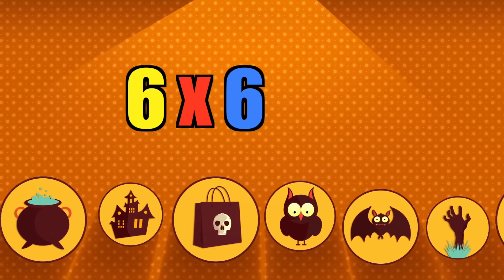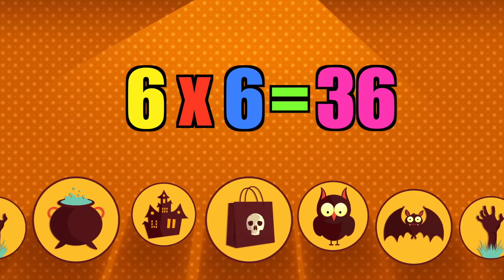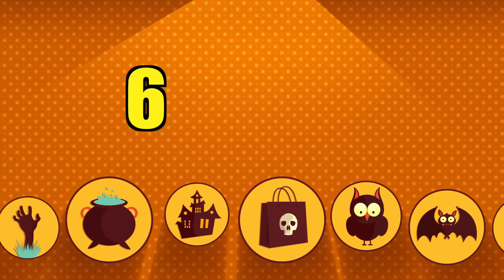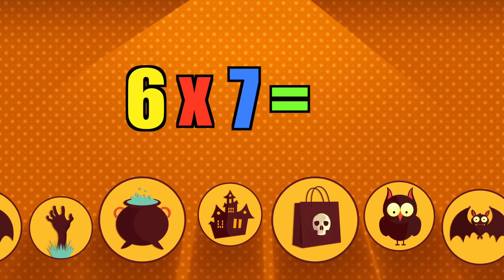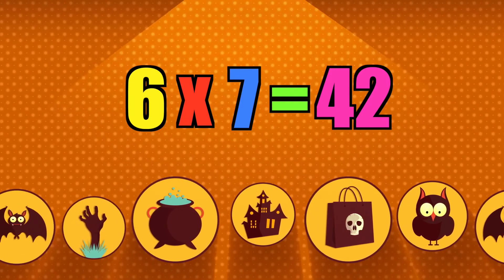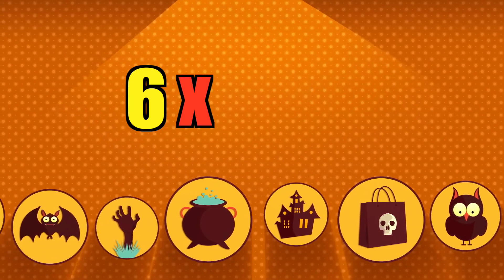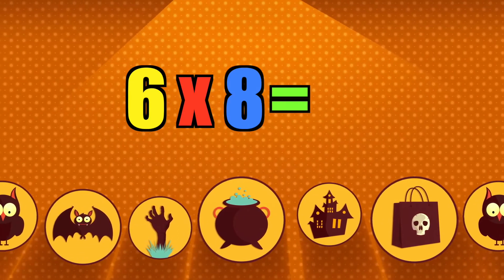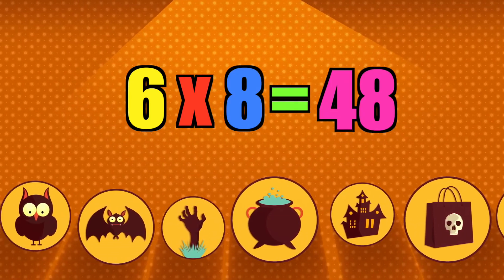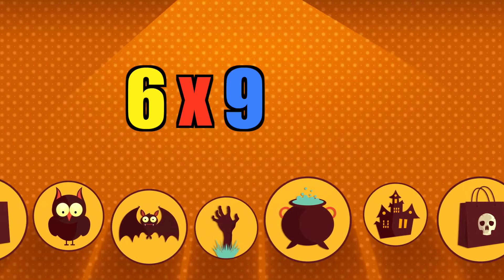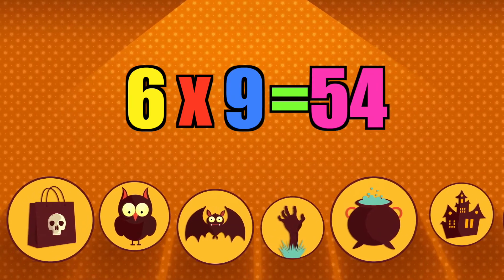Six times six is thirty-six. Six times seven is forty-two. Six times eight is forty-eight. Six times nine is fifty-four.